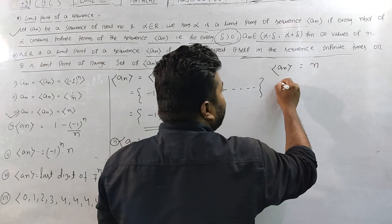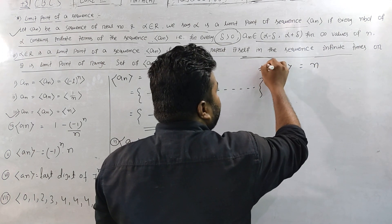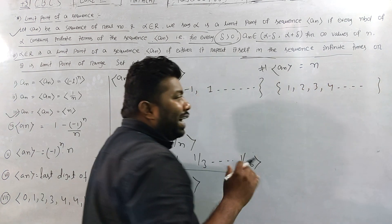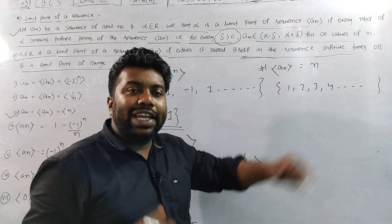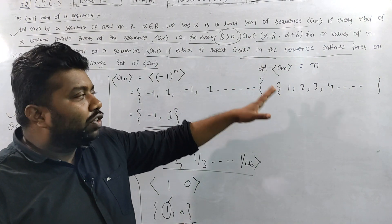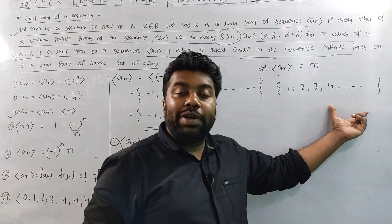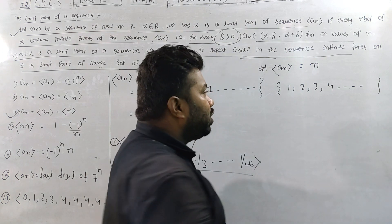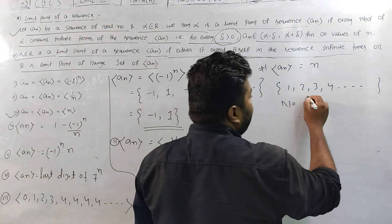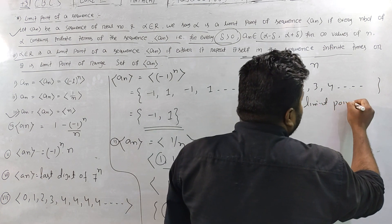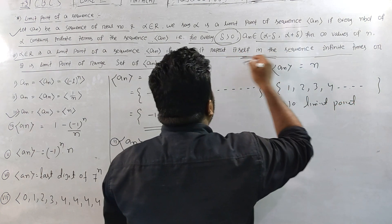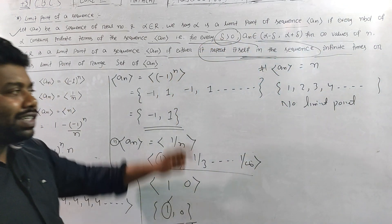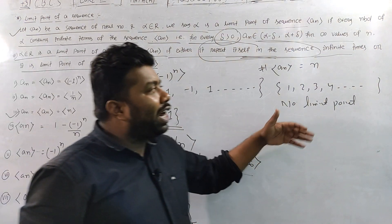For the third question, some number repeats itself. If a number repeats a finite number of times, it is not a limit point. If a number repeats an infinite number of times, it is a limit point. A number that repeats infinitely many times is a limit point of the sequence.